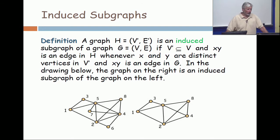For example, there is no edge between 1 and 4 on the right because there is no edge between 1 and 4 on the left. So you couldn't possibly have that edge. But if you delete on the right the edge from 1 to 5, then it's no longer an induced subgraph. Is the notion of an induced subgraph clear?